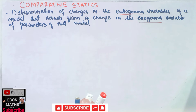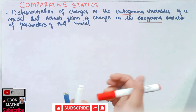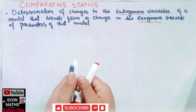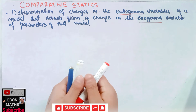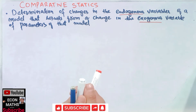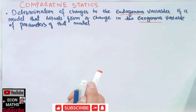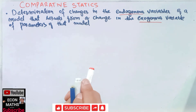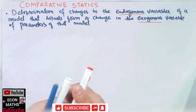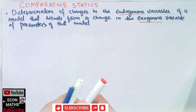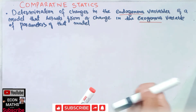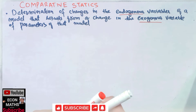For example, it is used to see the impact of tax or subsidy on consumer demand. We can also use it for the impact of a change in investment or government spending on national income. For that we use the comparative statics analysis.